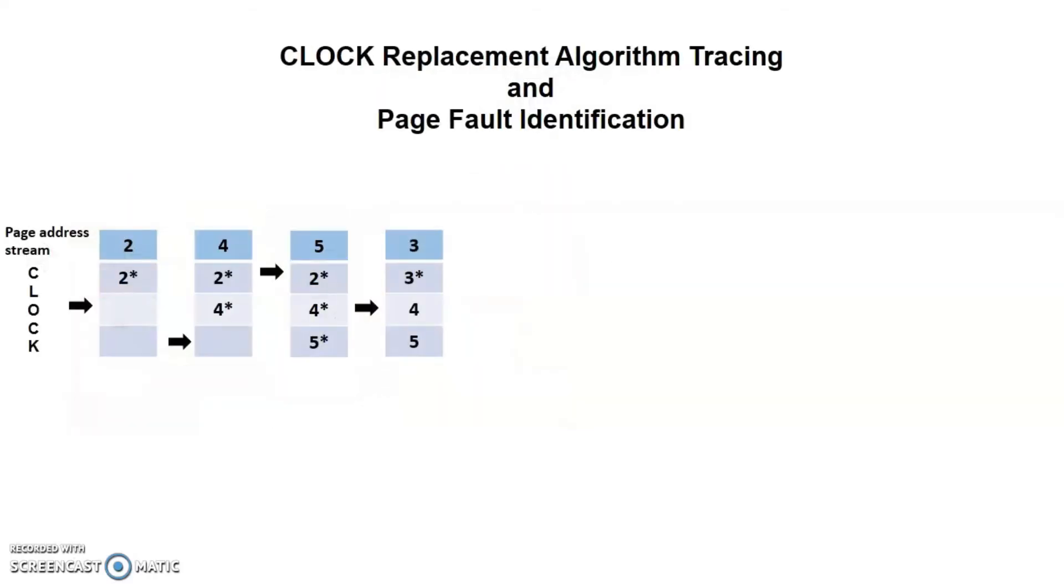So if we look at the pointer position at frame 2 here, it no longer has 1 use bit. Therefore, page 2 can easily replace it. Then pointer moves to the next one and same goes with page 5. Page 6 can replace it and pointer moves to the next one. Notice that page 1 cannot fill in the frame because all of the frames has 1 use bit. Therefore, we need to use the same method like we did previously. And also, page fault will occur for all 3 pages: 3, 2 and 6.